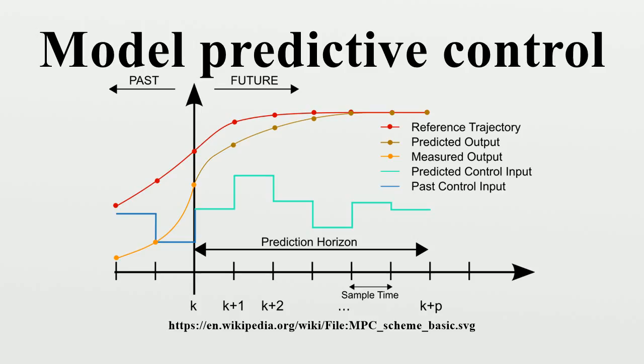PID and LQR controllers do not have this predictive ability. MPC is nearly universally implemented as a digital control, although there is research into achieving faster response times with specially designed analog circuitry.